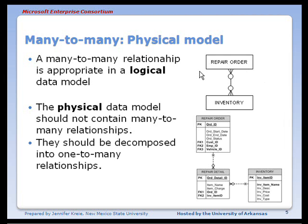Given this example as a logical model, having built databases, I would know that there would be at least one other entity added. So we would build three tables and not two, as you see, just for the two entities in the logical model.